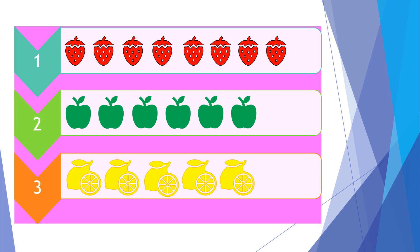Let's start with our first three questions. To see how many strawberries are there, how many apples are there, and how many lemons are there. Please count them in the tally systems and our 10 seconds start now.